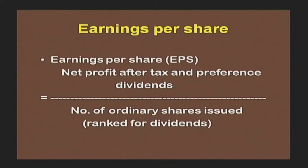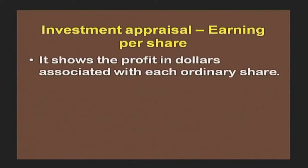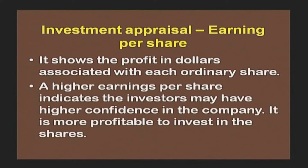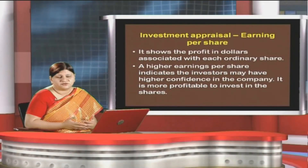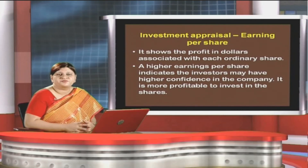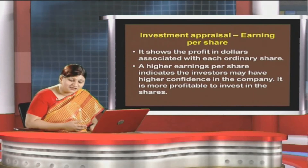Let us highlight these formulas in detail. EPS is computed as net profit after tax and preference dividend, divided by number of ordinary shares issued and ranking for dividends. It shows the profits in rupees associated with each ordinary share. A higher EPS indicates investors may have higher confidence in the company; it is more profitable to invest in the shares because profits are averaged out by the number of shares, so if EPS is higher the investors would receive dividends on a higher side.